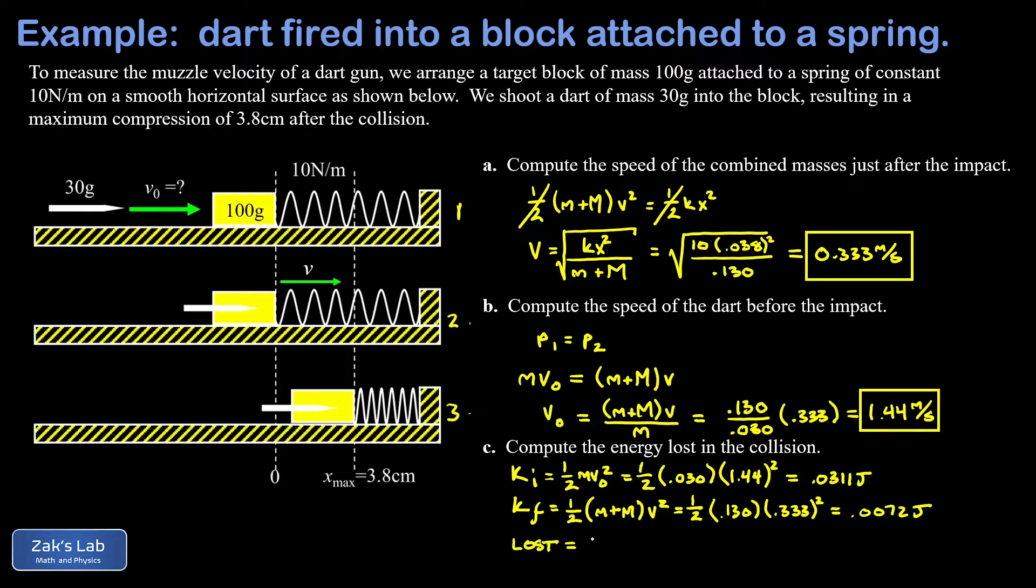How much was lost? You just take the difference between the initial kinetic energy and the final kinetic energy. This turns out to be 0.0239 joules. And we're done.